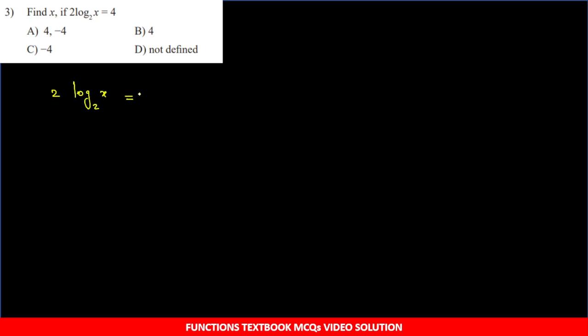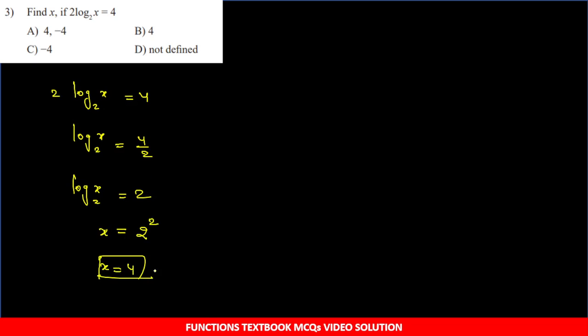Third question: find x if 2·log_x(base 2) = 4. Equation given: 2·log x (base 2) = 4. So log x (base 2) = 4/2 = 2. X ka value find karna hai to log ko hatate hain: log ka base 2 right hand side mein exponent ka base banega, so x = 2 raise to 2 = 4. Simple question, option B.